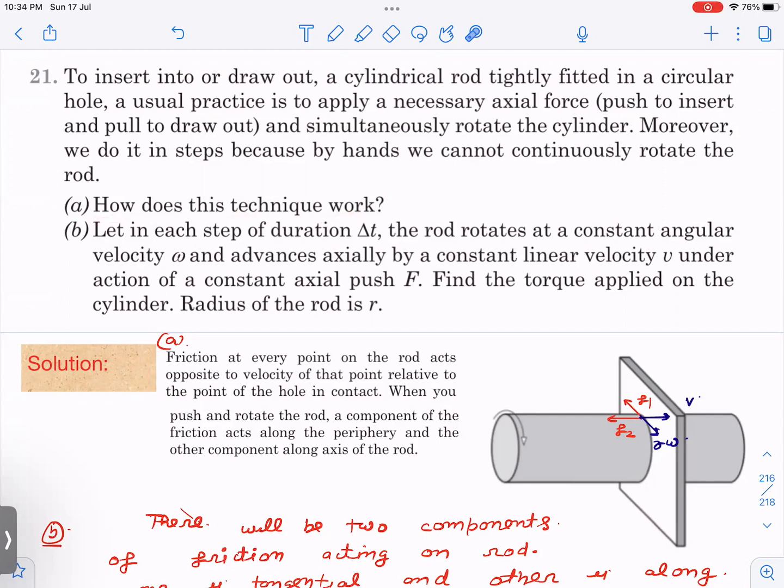Second question is, some duration delta t is given, and the rod rotates with constant angular velocity omega and moves with constant velocity v. You have to find the torque applied on the cylinder. Radius of the rod is r. Let us answer this question first.